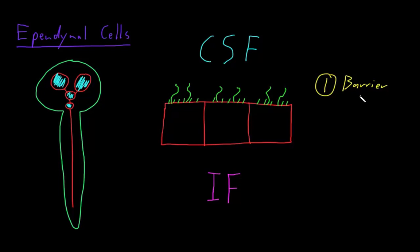Now as barriers go, the ependymal cells form a fairly leaky barrier, particularly if we were to compare it to the blood-brain barrier created by the capillaries in the central nervous system and the astrocyte end feet.